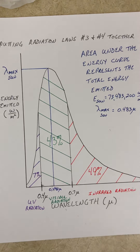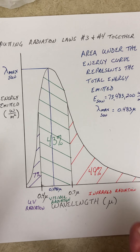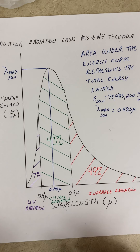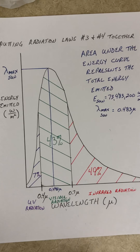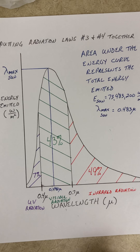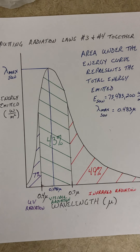You could draw this figure for any object — this figure just happens to be for the Sun. We can draw this figure for the Earth, or for a banana — it doesn't matter what the object is. Every object has an energy curve. Once you figure out what the energy curve represents, it really is helpful in understanding the radiation laws. I hope this puts things together for you, and as always, if you have questions, let me know.